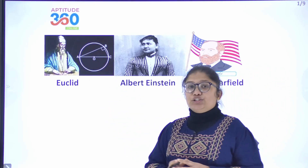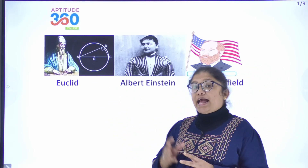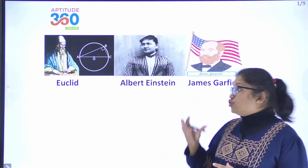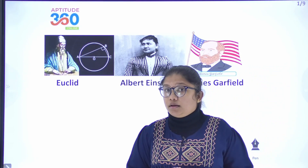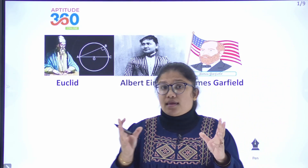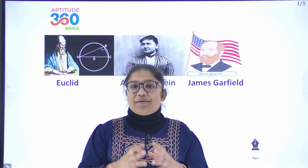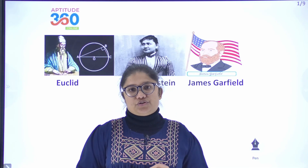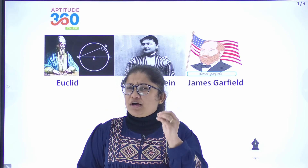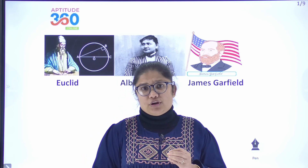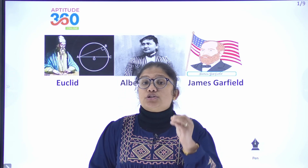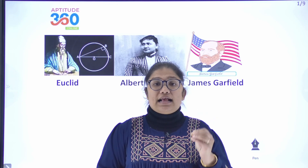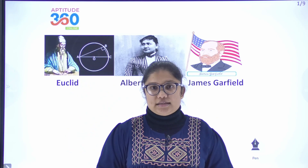What do Euclid, 12-year-old Albert Einstein, and American President James Garfield have in common? They all came out with elegant proofs to prove Pythagoras theorem — one of the fundamental rules for geometry and also the basis for constructing stable buildings and triangulating GPS coordinates.